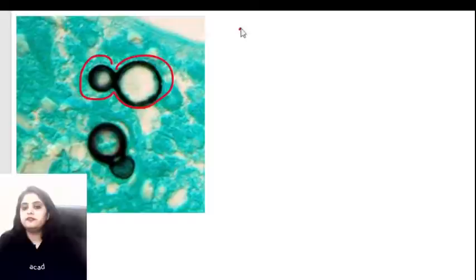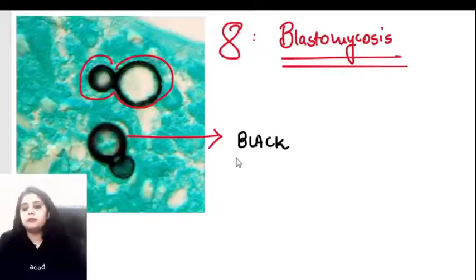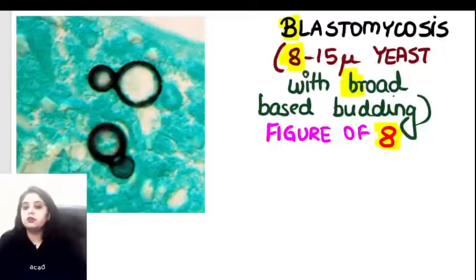The next fungus shows a classical figure-of-eight appearance, and 'B' and 'eight' go together. Everyone knows this is Blastomyces or blastomycosis. It appears black because of the Gomori Methenamine Silver stain, which always gives a black color.